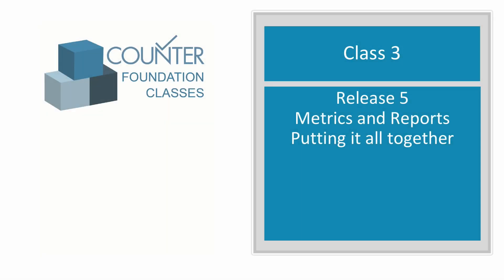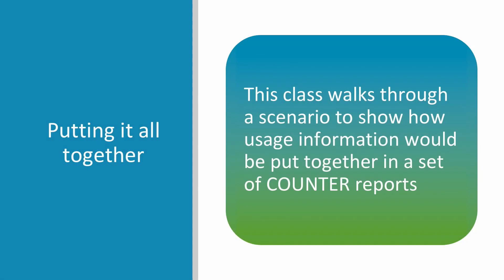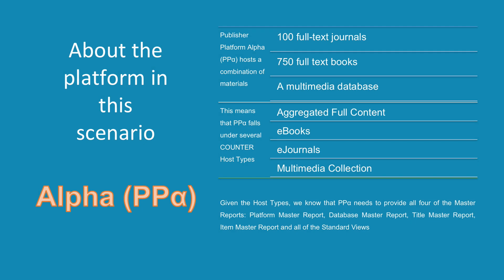Welcome to the third Counter Foundation class. This class builds on Class 1, which explained metric types, and Class 2, which explained counter reports. This class walks through a scenario to show how usage information would be put together in a set of counter reports. The publisher platform in this scenario is called Alpha, or PPA.